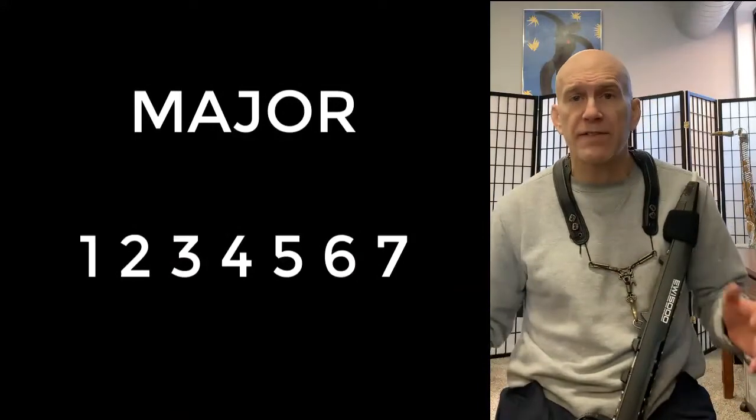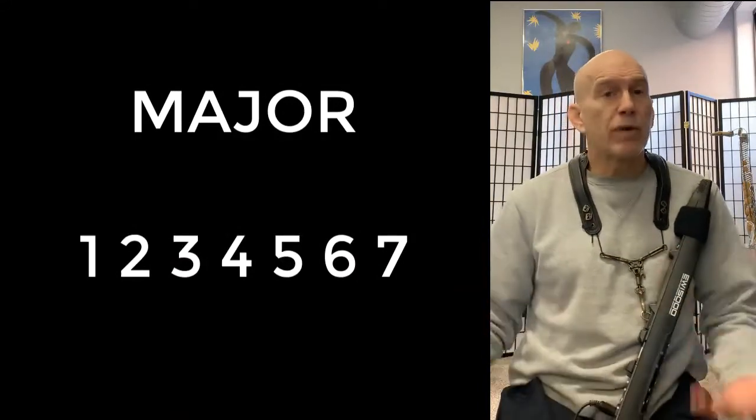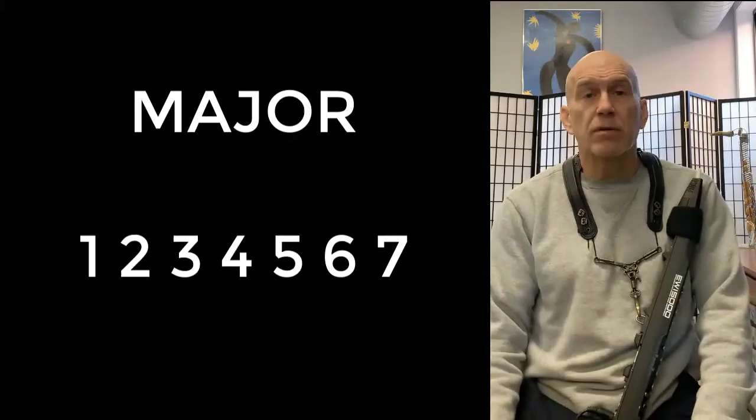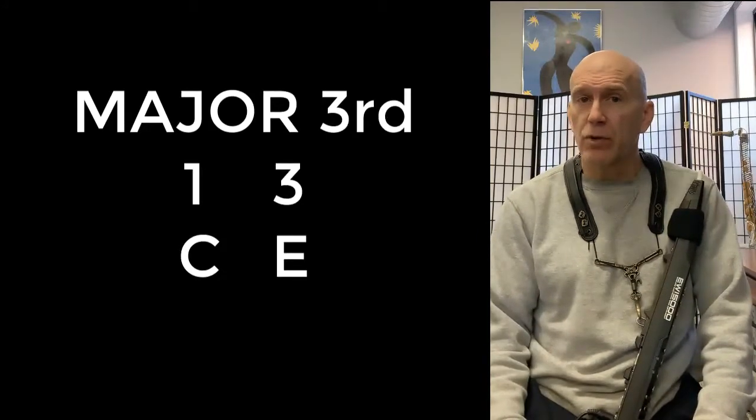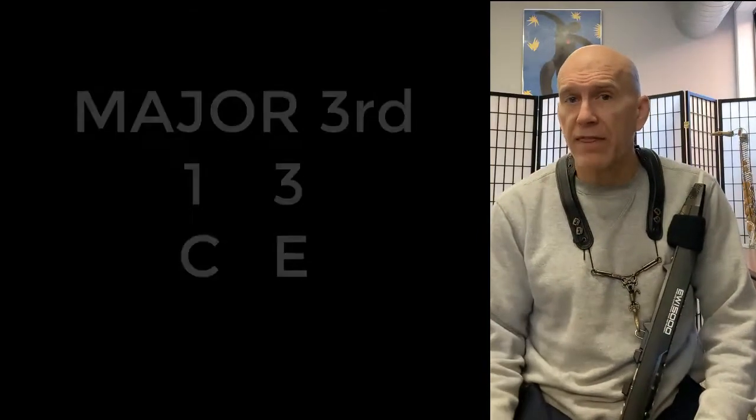1, 2, 3, 4, 5, 6, 7 unaltered at all reflects a major scale. All right, so 1 to 3 is going to be a major interval. If we want to make it a minor interval we just flat it. We'd call it a flat 3.